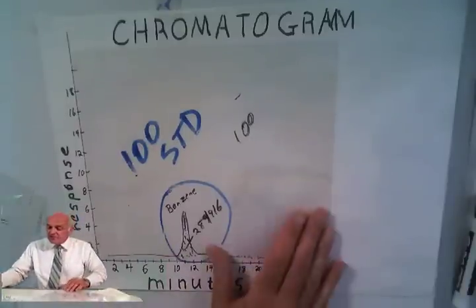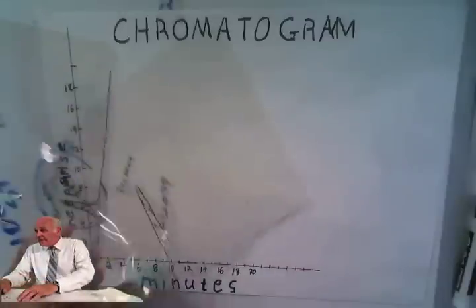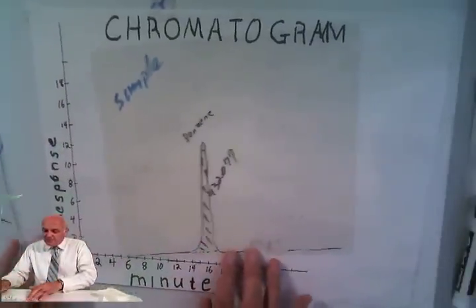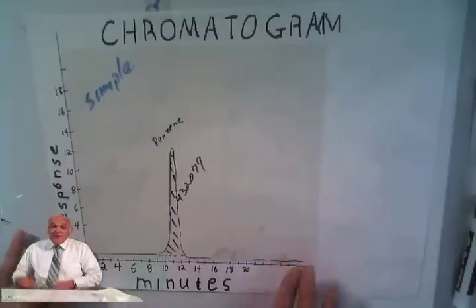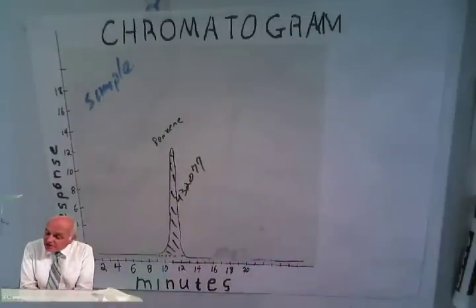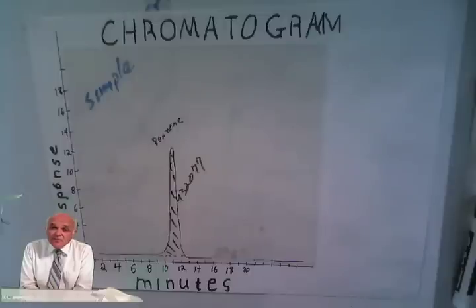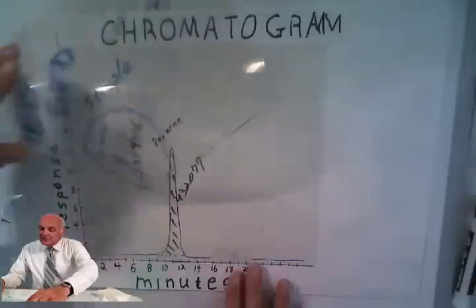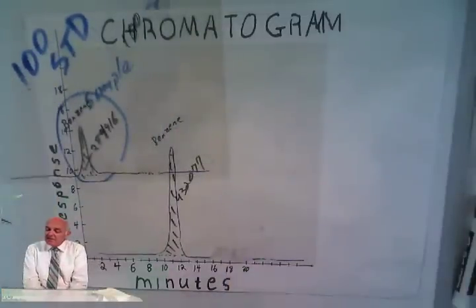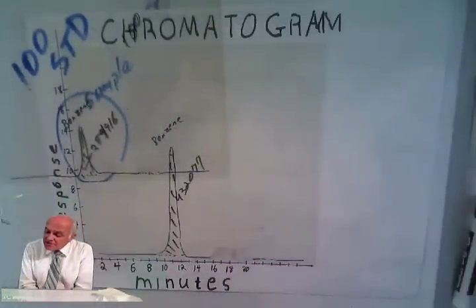Okay, let's go to an unknown. We have an unknown sample, benzene, the same thing, and we run it through the same procedure and we get an amount of 432. So, how much benzene is in the sample? Well, our 100 gave us a 289. Our unknown is giving us a 432.